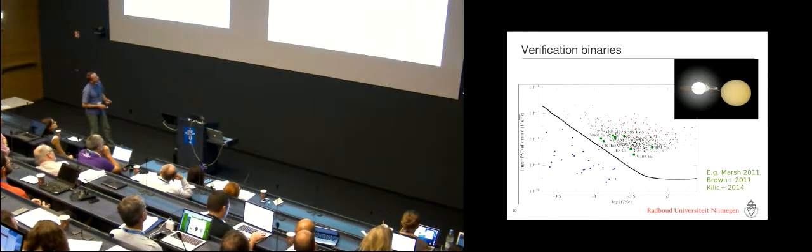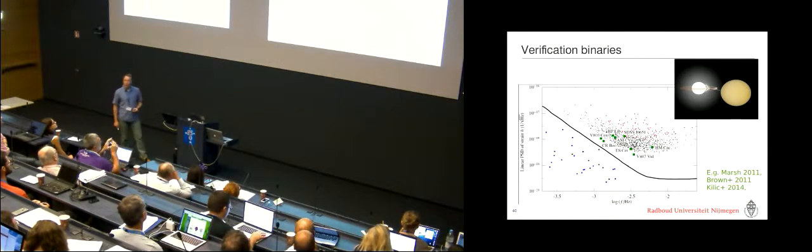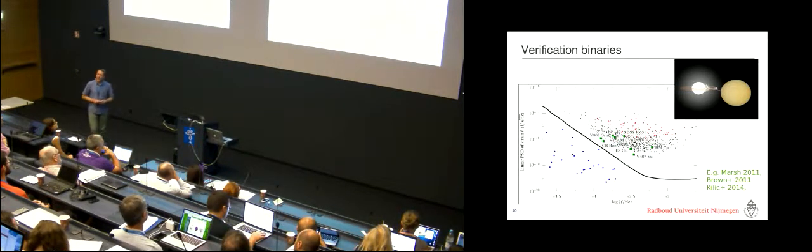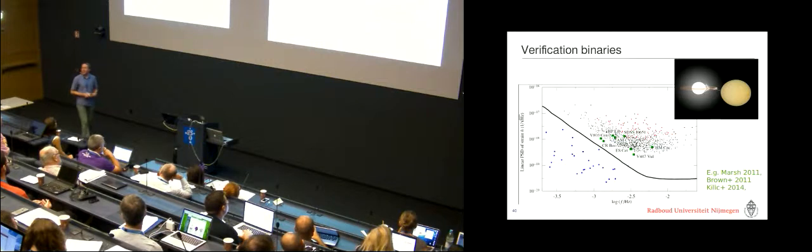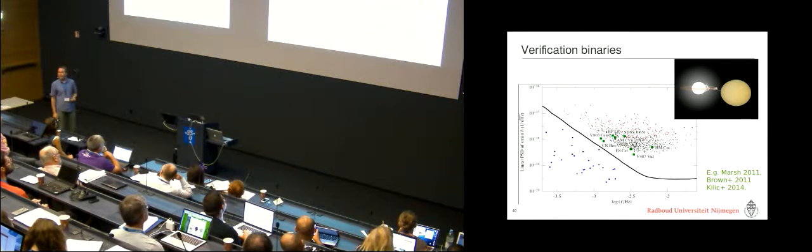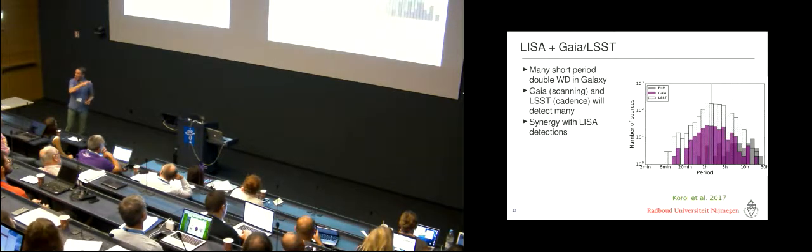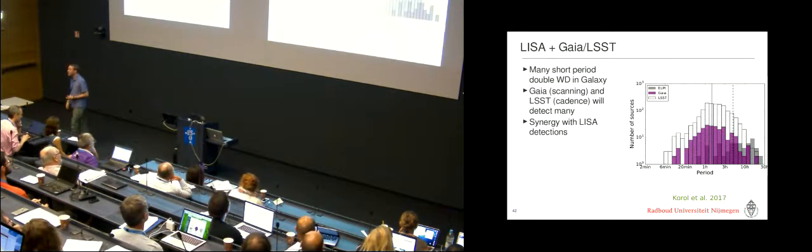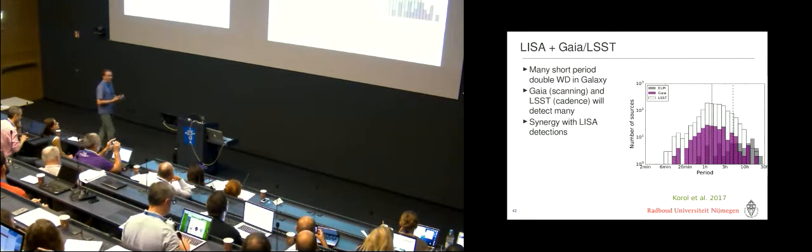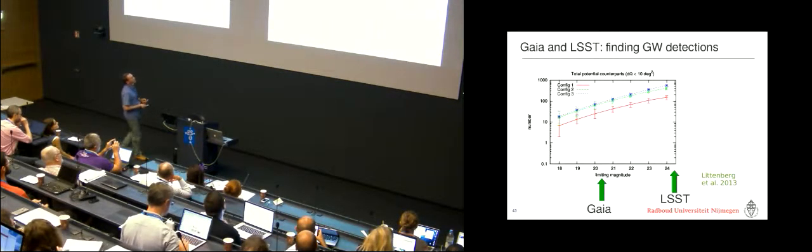The nice thing is that we actually know a number of binary systems from electromagnetic observations double white dwarfs and so-called AM CVn stars interacting double white dwarfs that are guaranteed sources for LISA and so we can in principle expect that many more of these will be found in the future in the years between now and the launch of LISA for instance with Gaia and LSST and so this is a simulation that essentially asks the question which binaries will be found by Gaia and LSST that can be LISA sources.